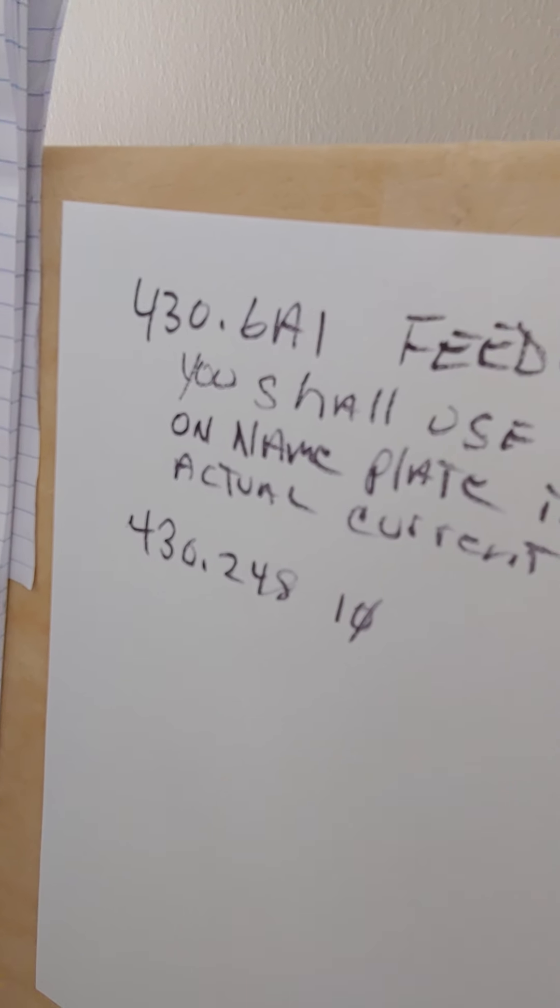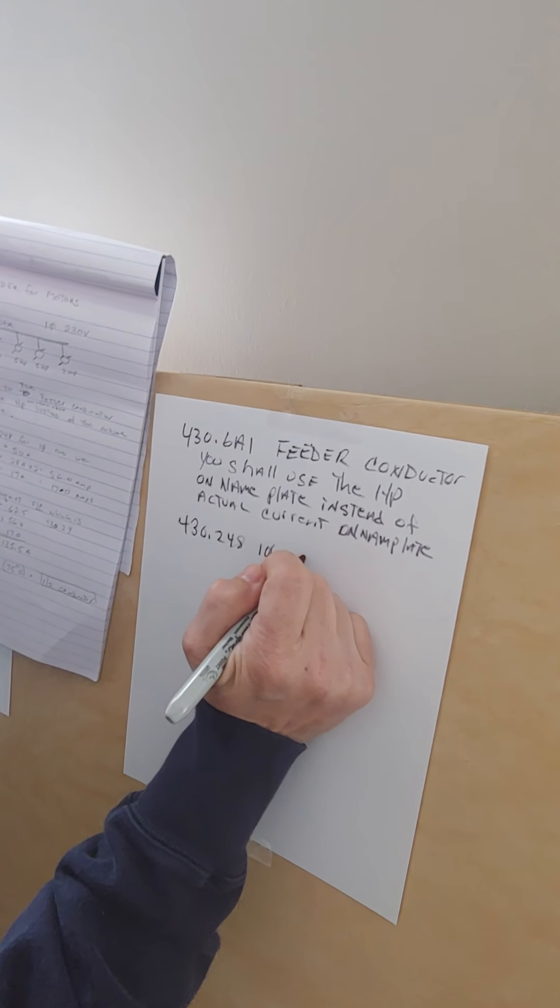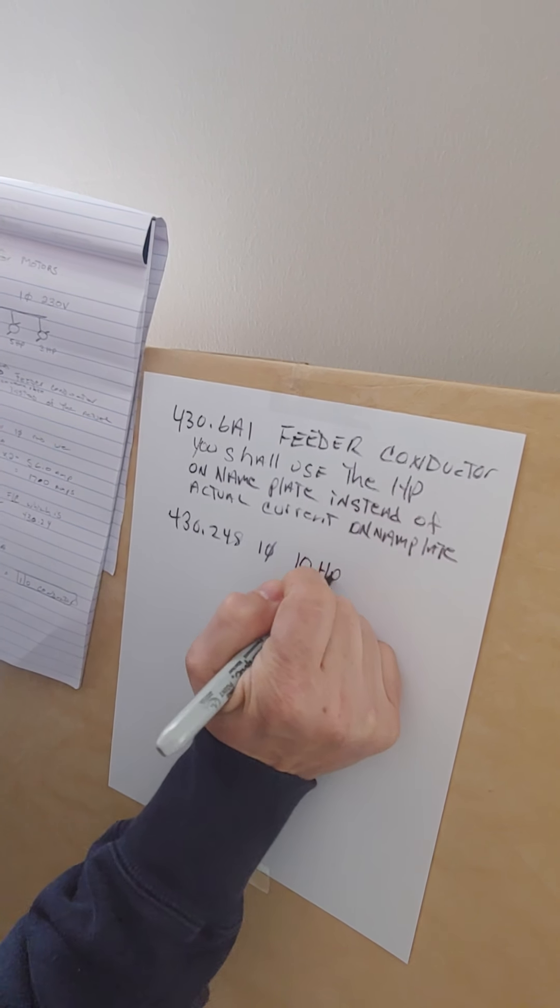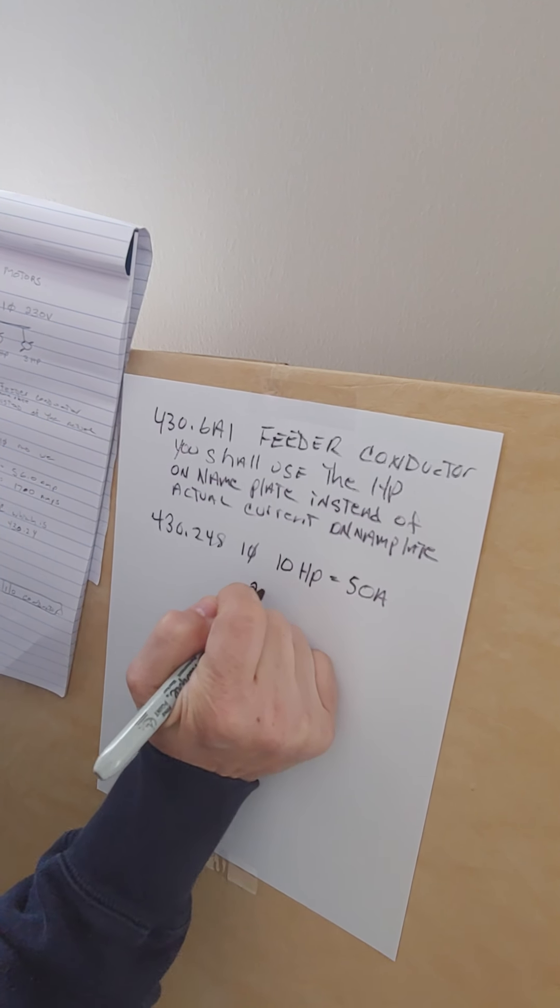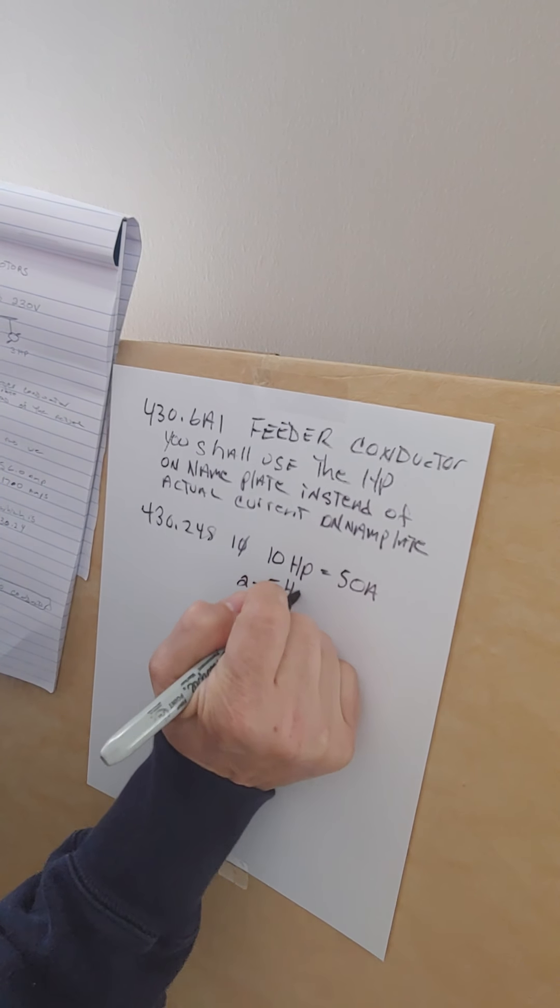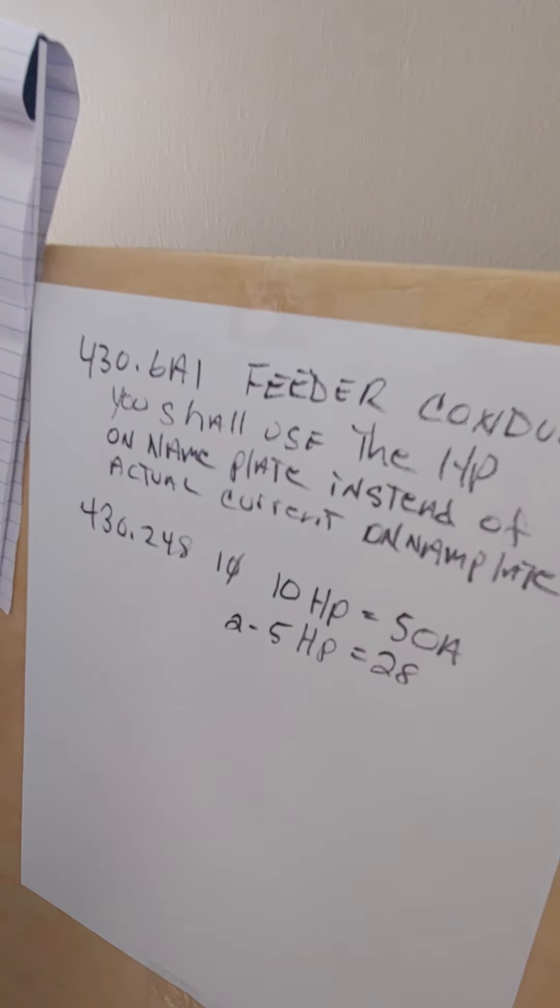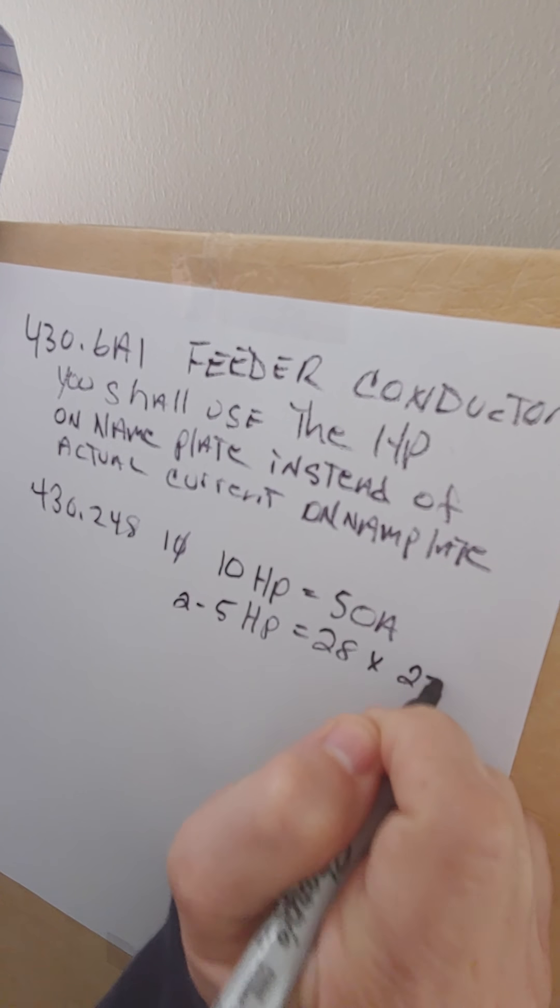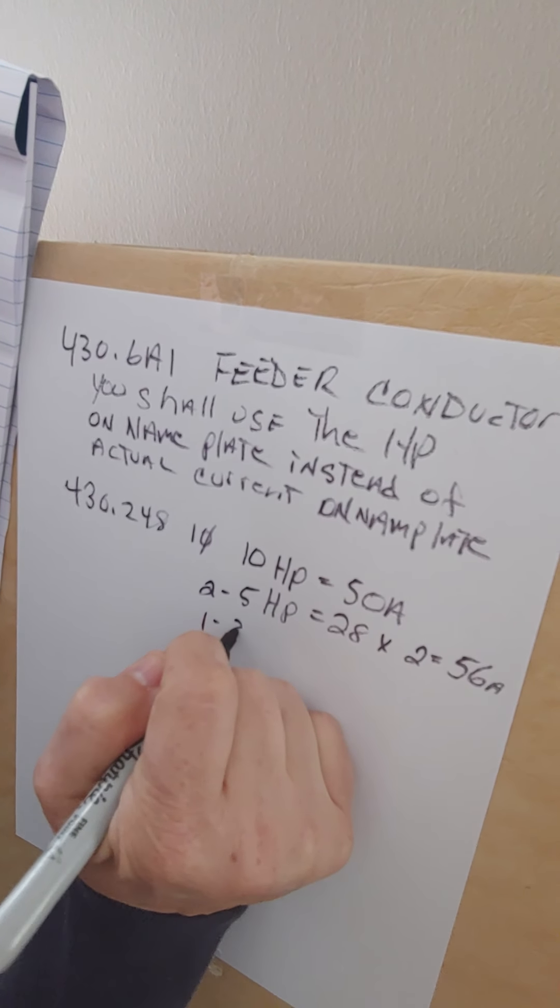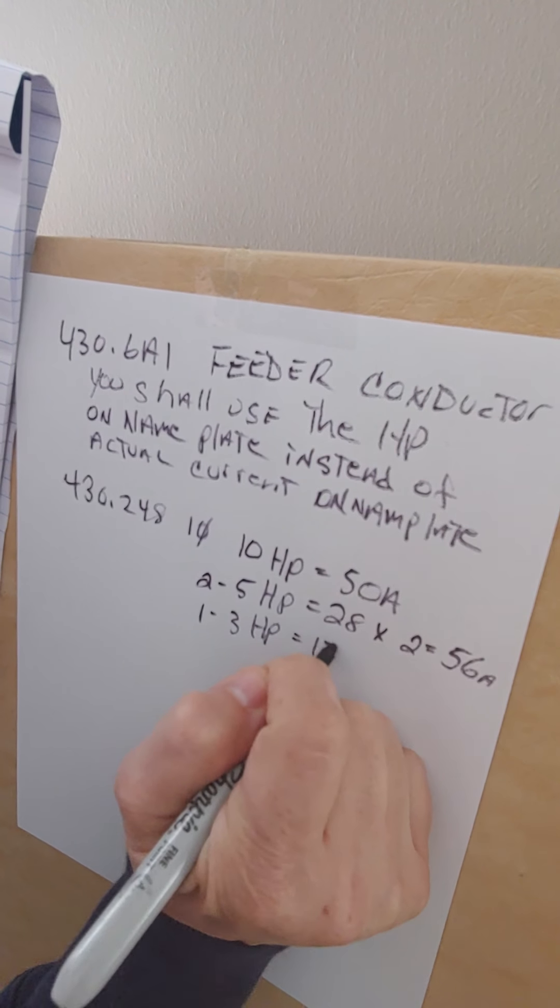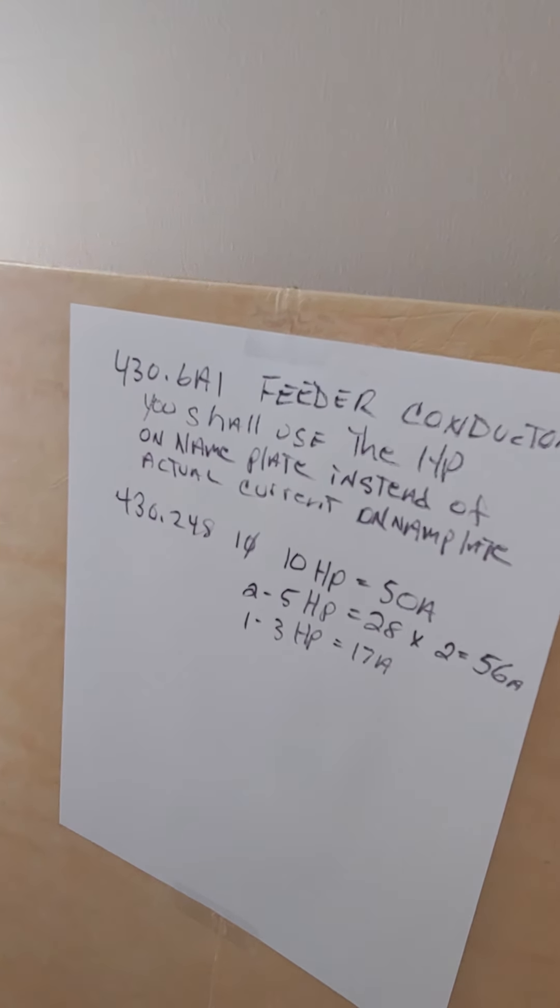We're going to go to table 430.248 single phase. We're going to find that 10 horsepower is equal to 50 amps. Two 5 horsepower motors, each one is equal to 28 amps. We're going to times this by two, which equals 56 amps. And we have one 3 horsepower, which is equal to 17 amps. That was step number two.